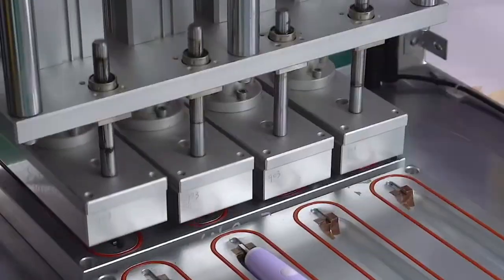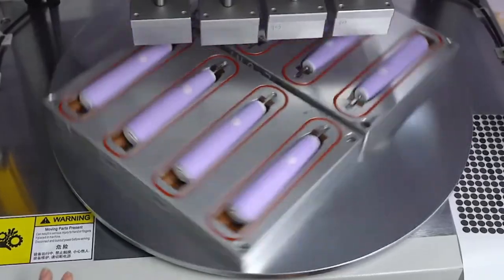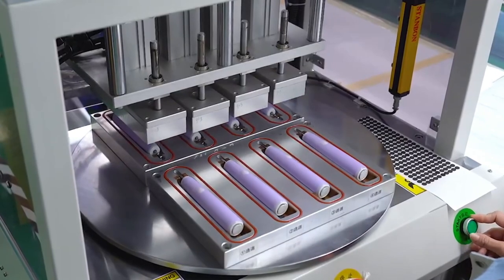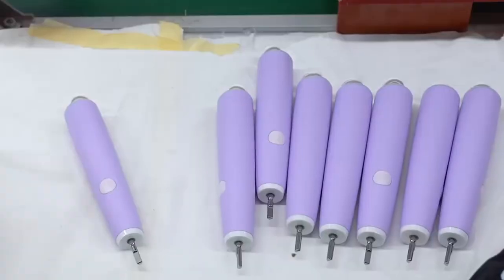Once all components are in place, the casing is sealed using ultrasonic welding, a method that uses high frequency sound waves to bond plastic parts tightly without screws or glue.